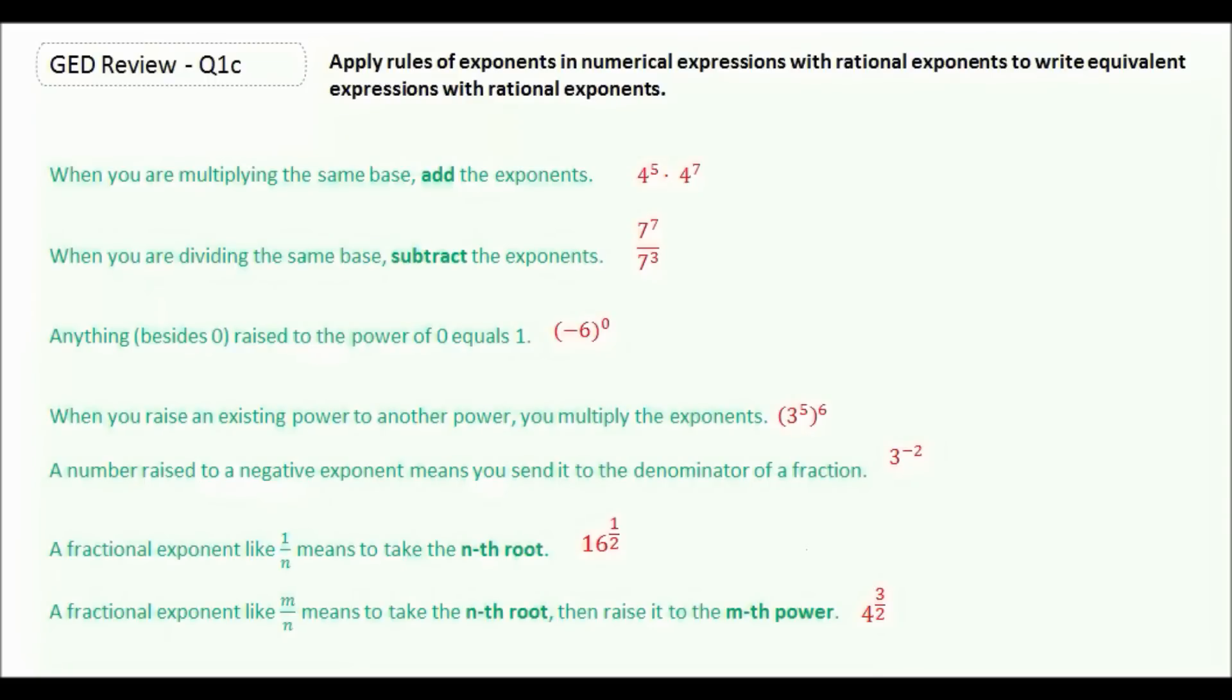The first thing is when you're multiplying the same base, you can add the exponents together. So we have 4 to the 5th times 4 to the 7th, our base is 4, and our exponents are 5 and 7. So we're going to say 4, and our exponent, we're going to add them together, and 5 plus 7 is 12, so it's 4 to the 12th power.